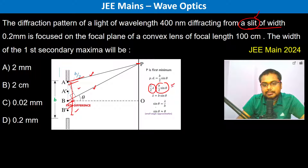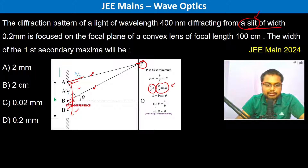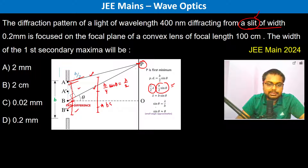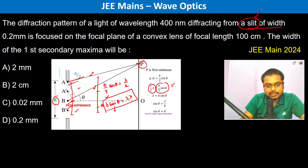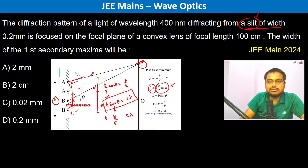Therefore this gives us a minima. Similarly, for the next minima above, we divide the slit into four parts. So B/4 · sinθ equals λ/2, therefore B · sinθ equals 2λ. Since θ is small, we can take sinθ ≈ tanθ, so B · (Y/D) equals 2λ.